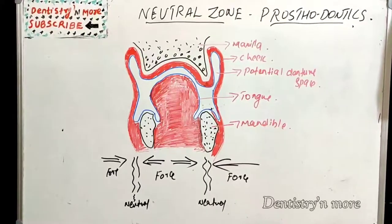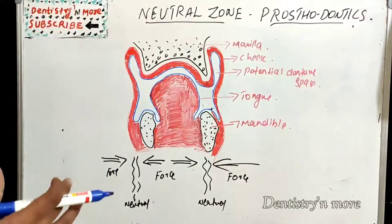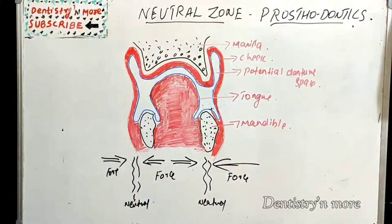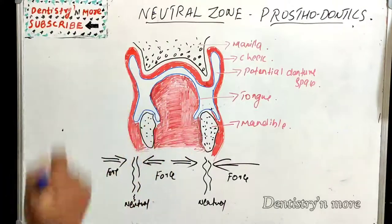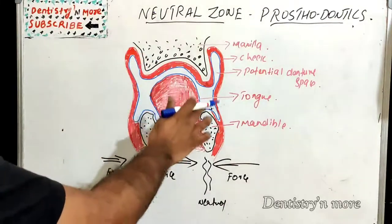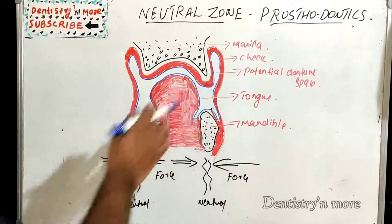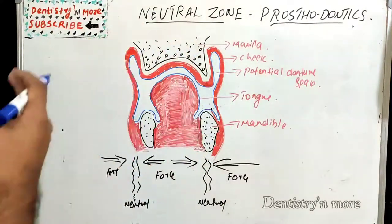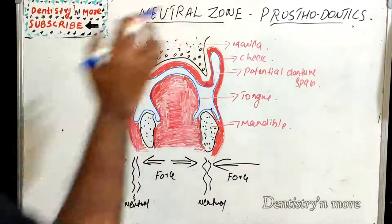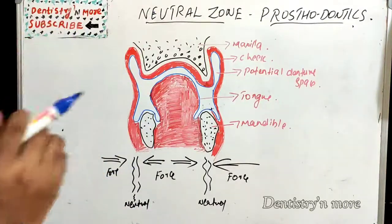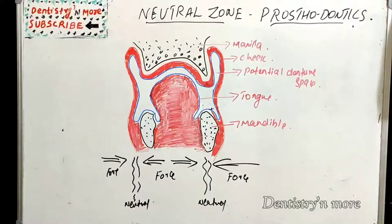Hello everyone, welcome back to another session in dentistry and more. Today's topic in prosthodontics is the neutral zone concept. The neutral zone is a potential space in the oral cavity where the forces from outside — from the lips and cheeks — and forces from inside — from the tongue muscles — are neutralized. This is the potential space for denture fabrication where muscle action from outside and inside are neutralized, allowing a denture with good retention and stability.